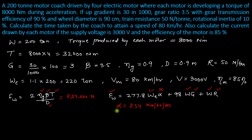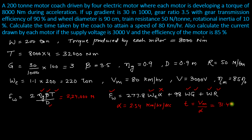After substitution, acceleration α = 2.54 km/hr/s. From this, the time required to reach 80 km/hr is t = Vm / α = 80 / 2.54 = 31.49 seconds. So the locomotive takes approximately 32 seconds to reach a speed of 80 km/hr.